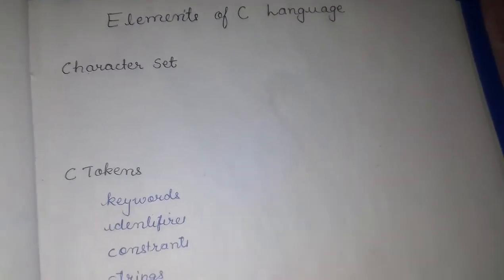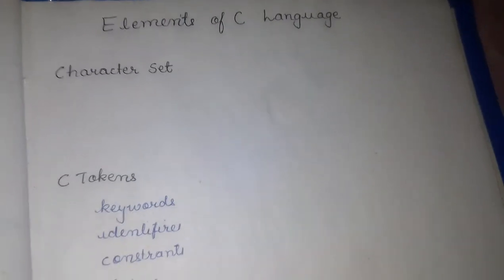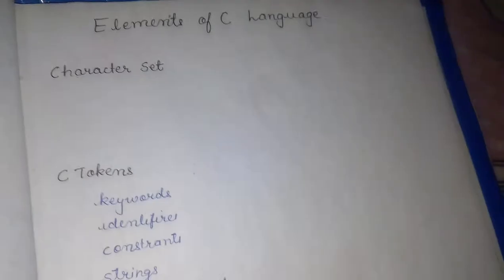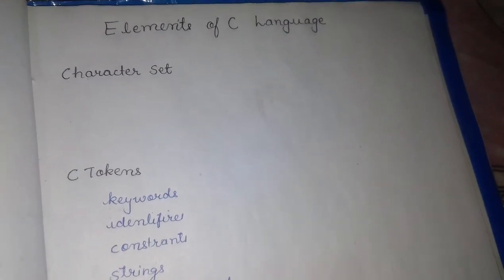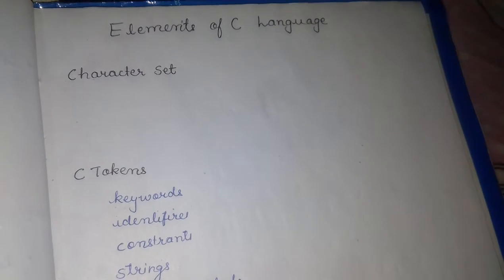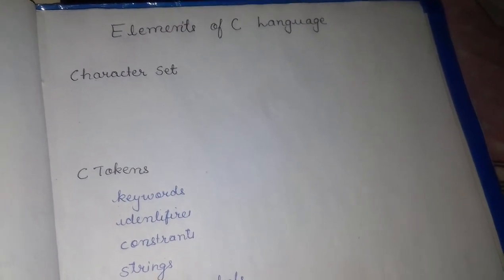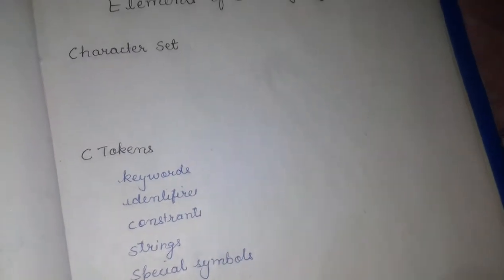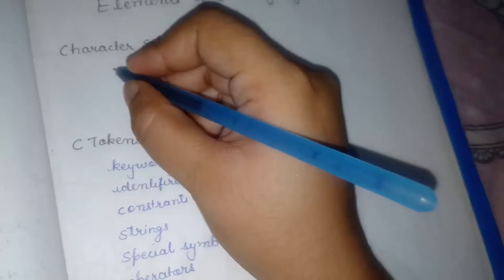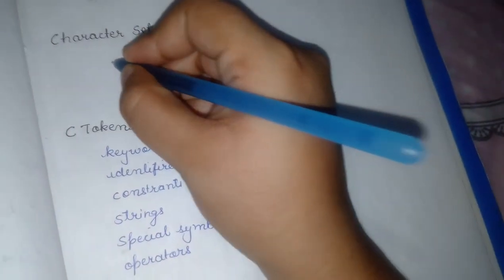Now we'll start from basics of C language. I'll explain the elements of C language. We'll start from character set. As usual, in English, a character is a single character alphabet, and it has alphabets.